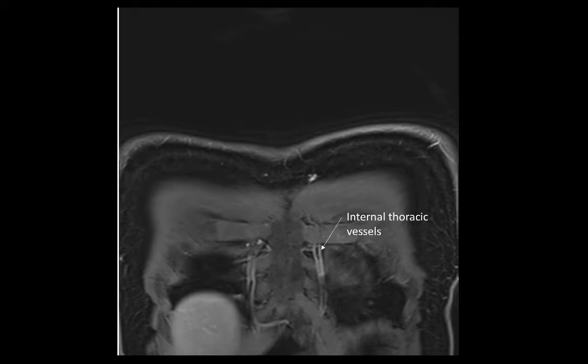Here we can see the internal thoracic vessels lateral to the sternum, and we can also see the costal cartilages and the liver.